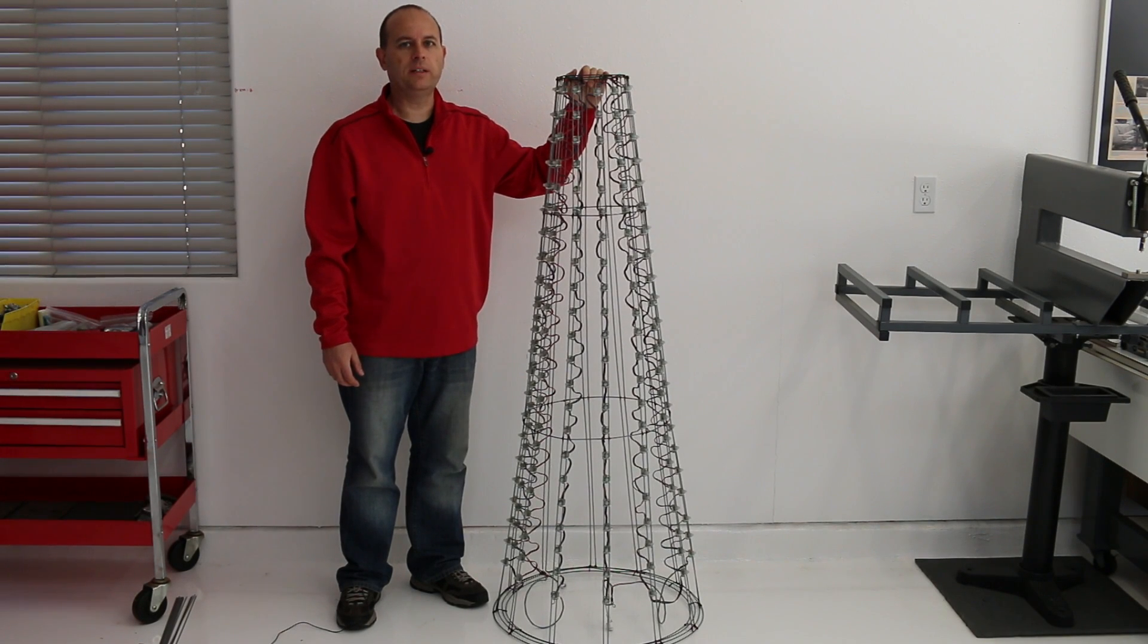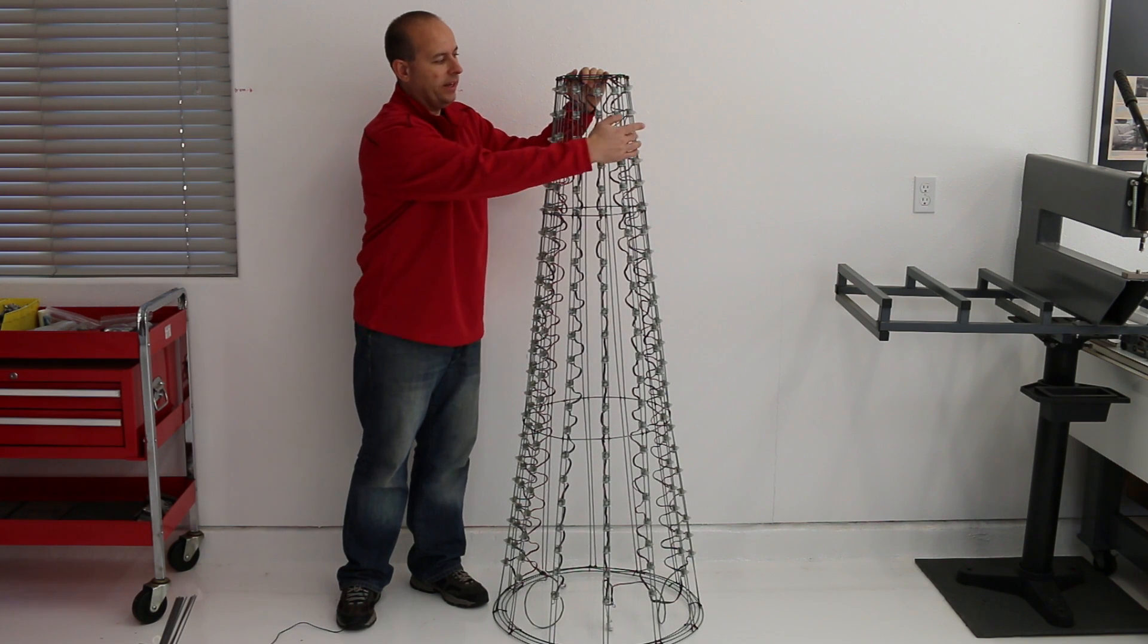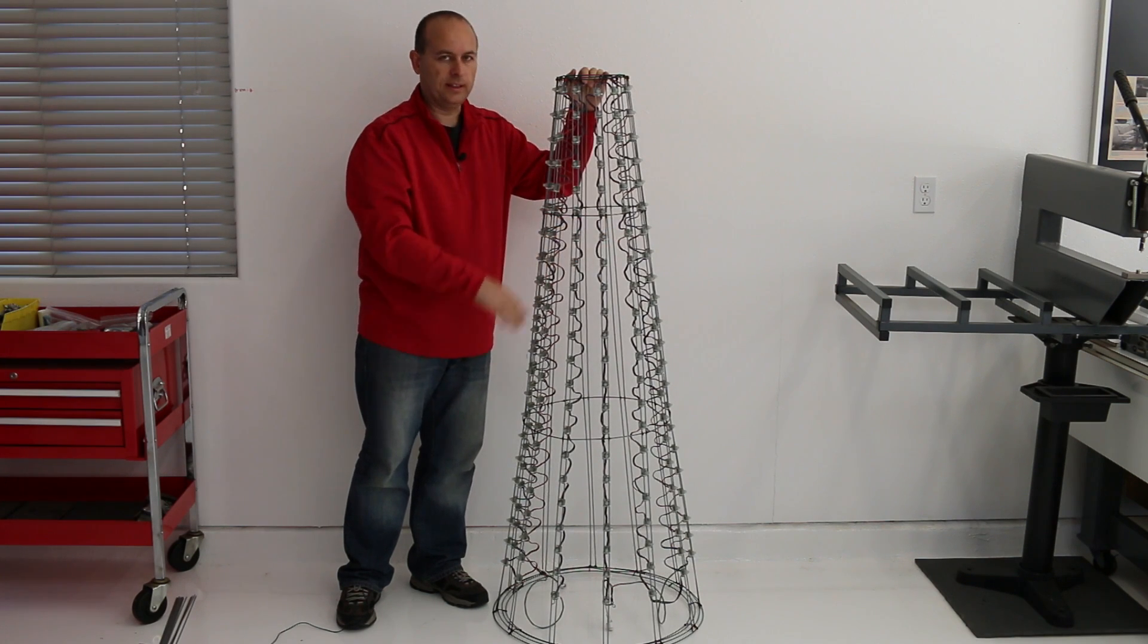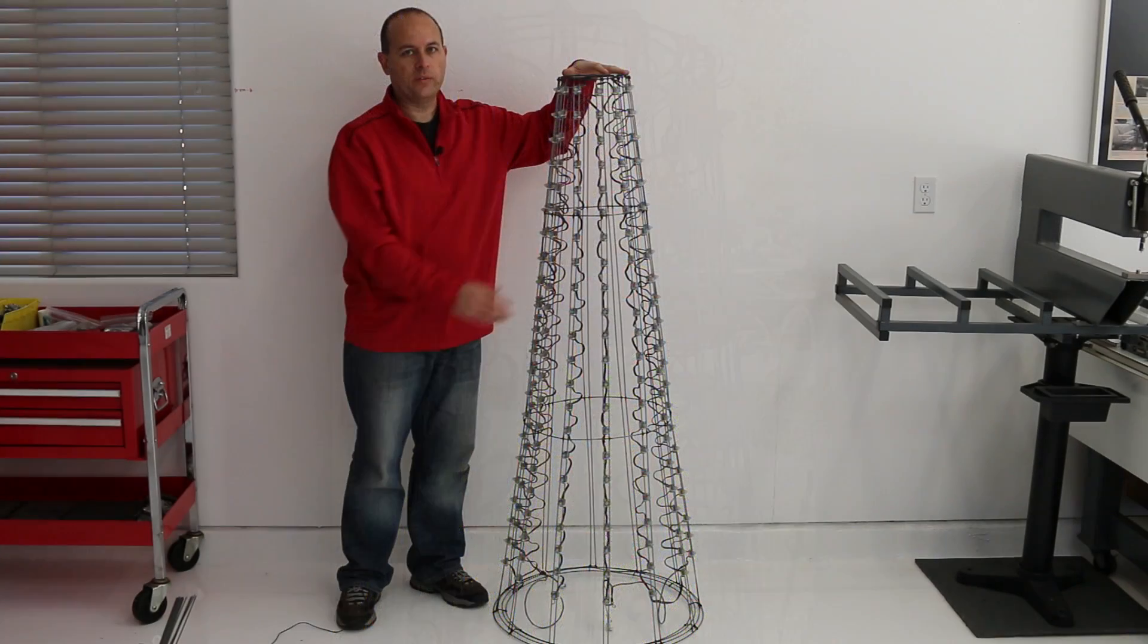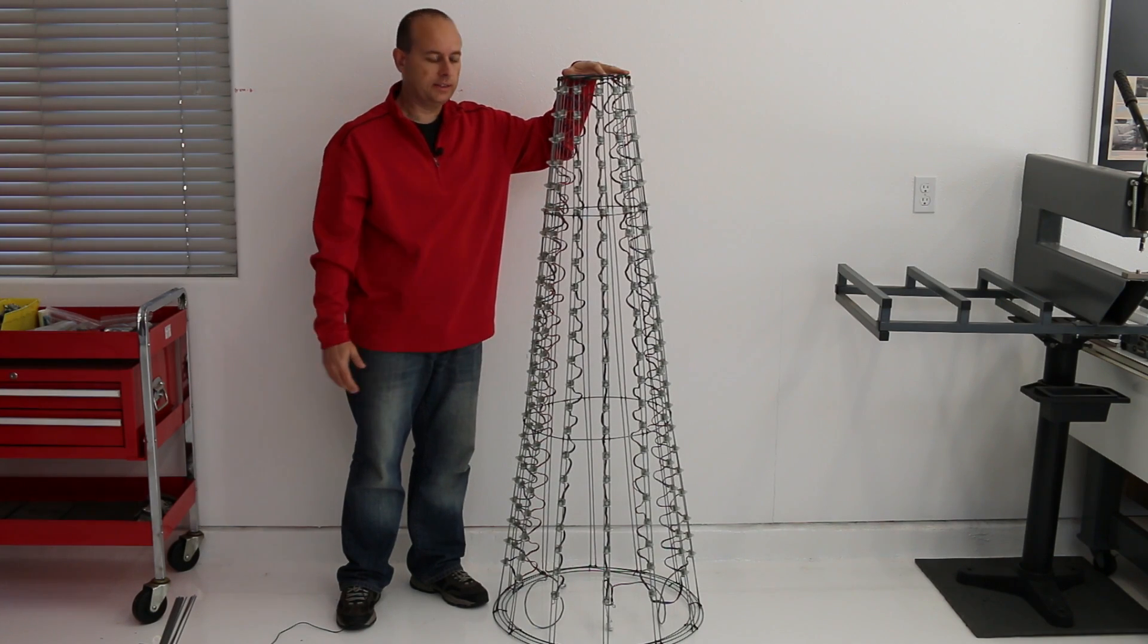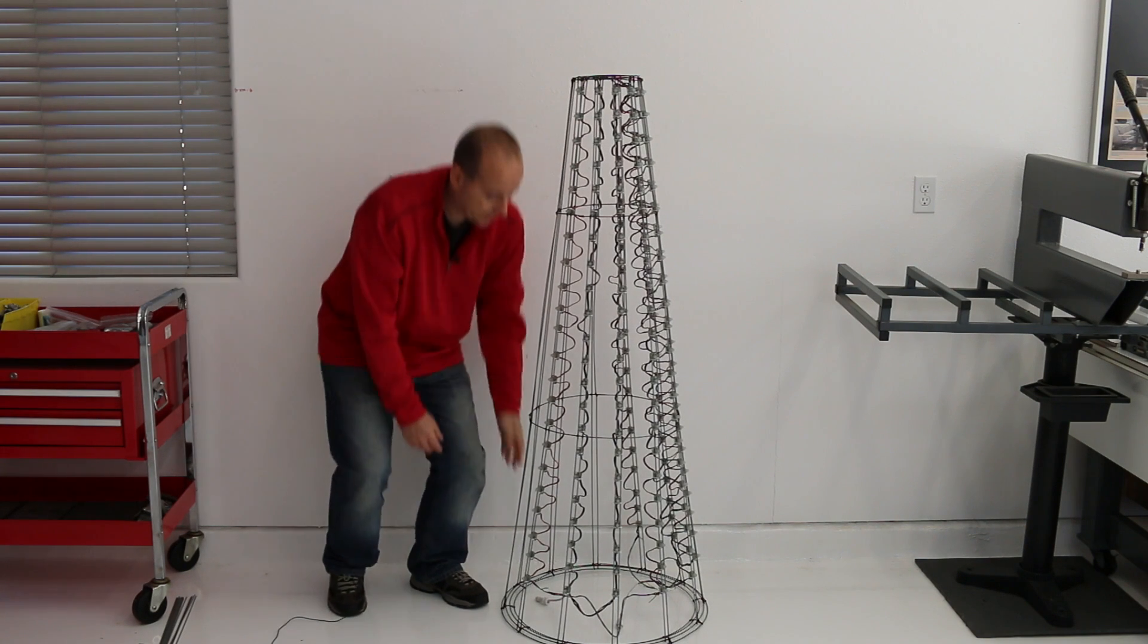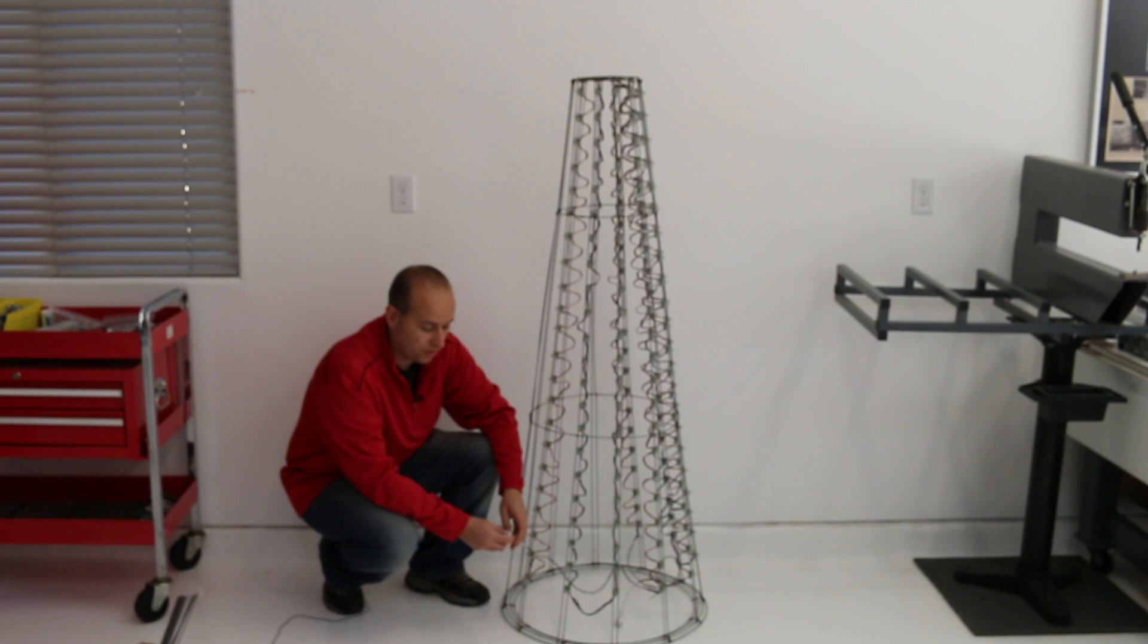Once the pixels have been secured in the tree, I just verify that each row is evenly spaced and that every pixel is aligned in that row. This is especially important for different types of effects where if they are not aligned, you can see it look jagged or zigzagged.